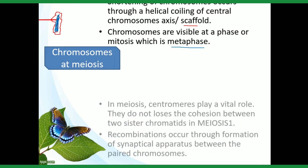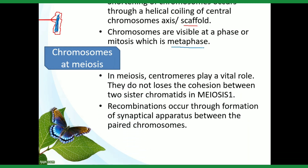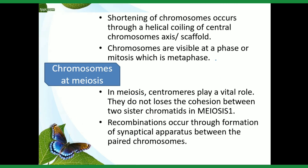Chromosomes at meiosis: during meiosis, centromeres play a vital role. They do not lose cohesion between the two sister chromatids during meiosis I — unlike in mitosis, where they do separate. Recombination occurs through the formation of a synaptical apparatus between paired chromosomes. Two chromosomes come together and pair up to form the synaptical apparatus — this is how synapsis occurs in meiosis.